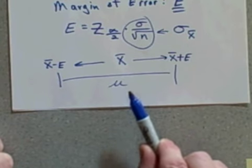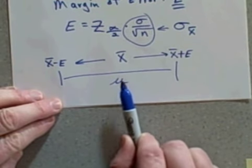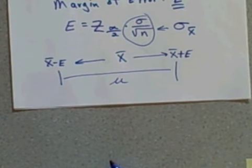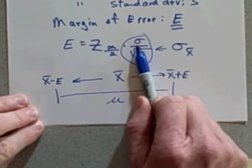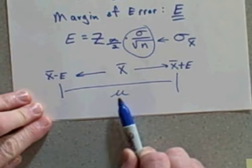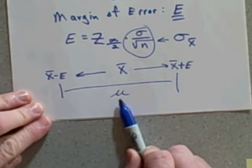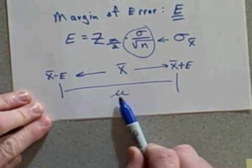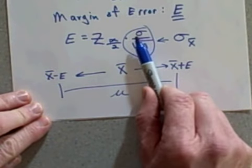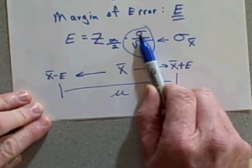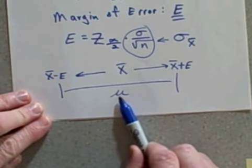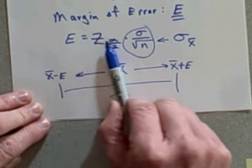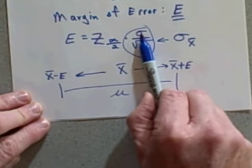Now there is a problem. Here's the problem: Is it likely if we're trying to find the population mean, or at least an interval for the population mean, is it likely that we will ahead of time know this population standard deviation? I mean, don't we normally calculate the standard deviation after we know the mean?